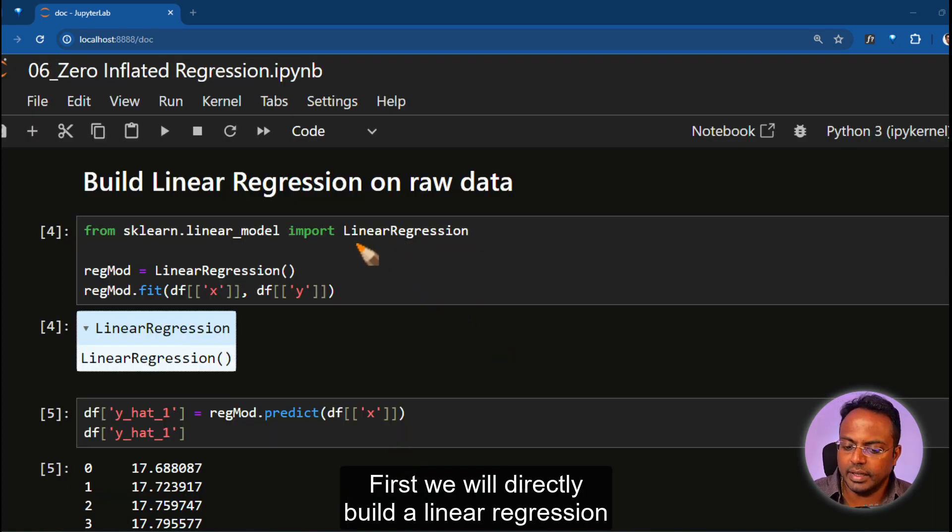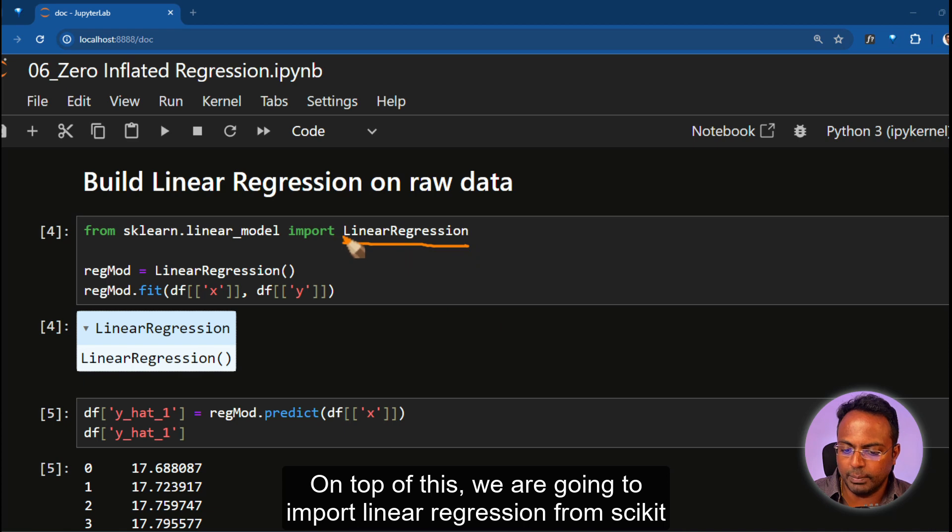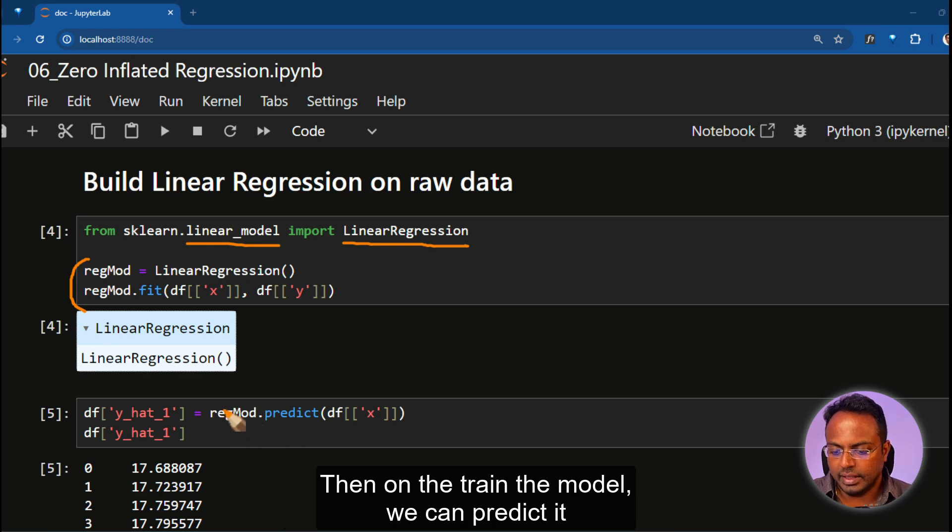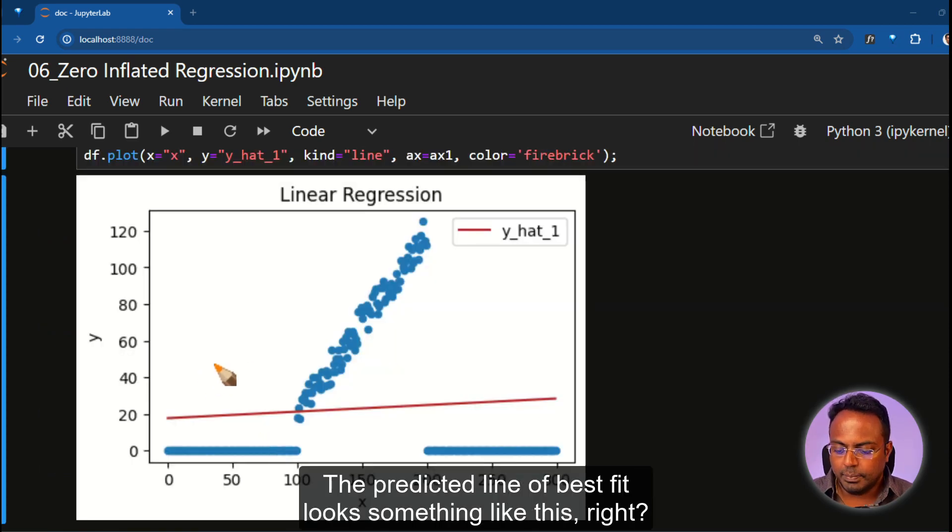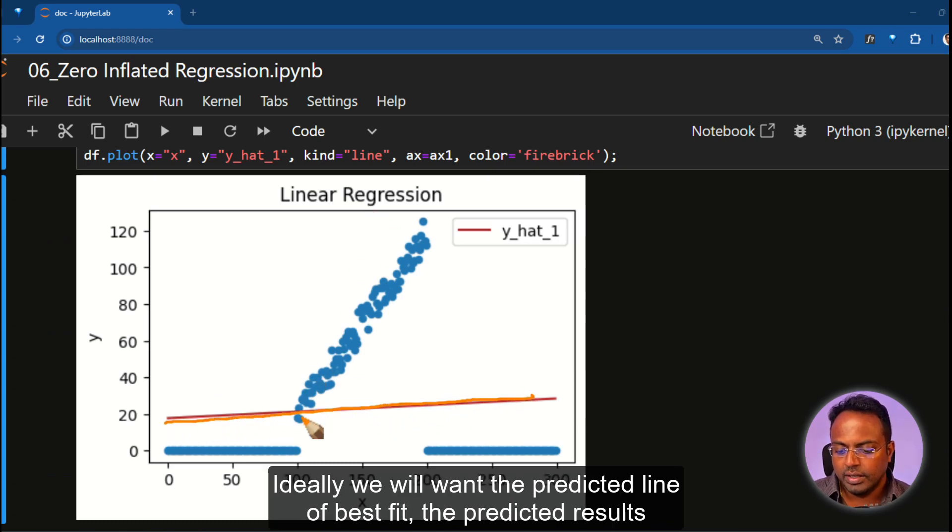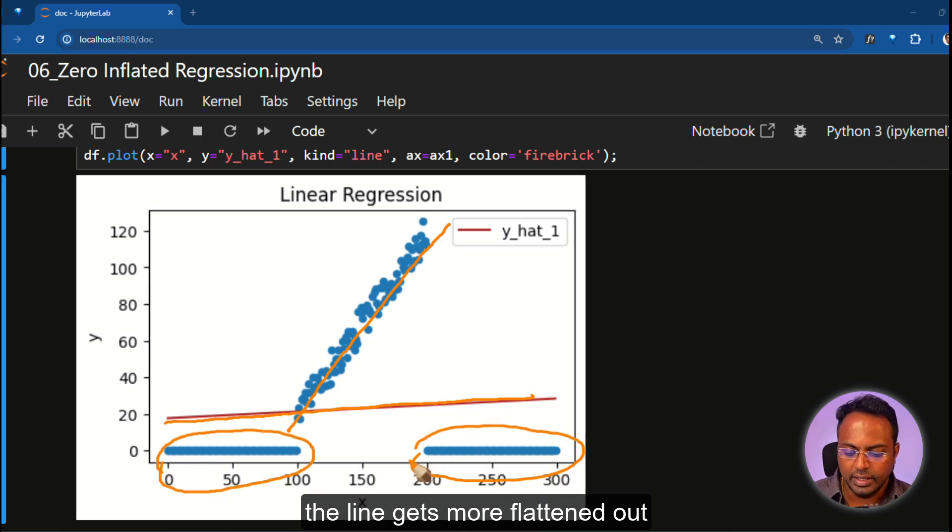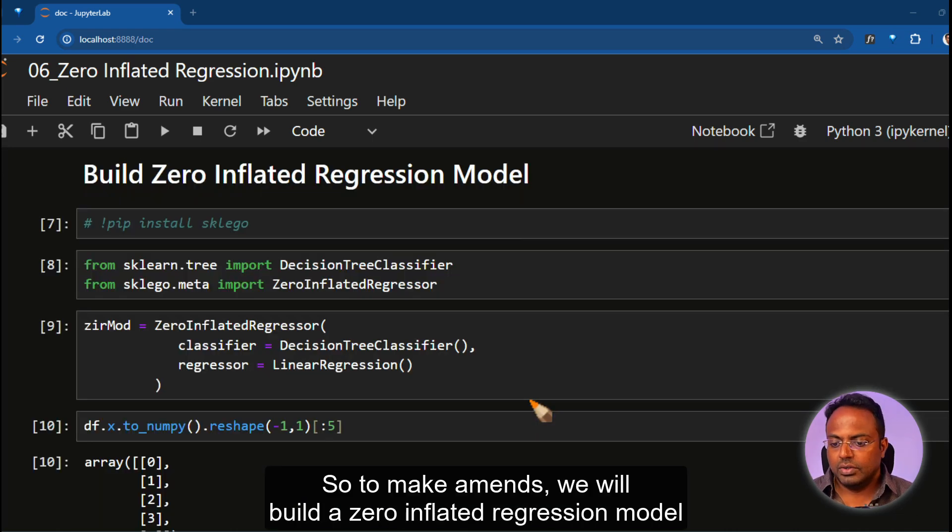First, we will directly build a linear regression on top of this. We are going to import linear regression from scikit-learn linear model, train the linear regression model. Then on the trained model, we can predict it. The predicted line of best fit looks something like this. Ideally, we will want the predicted line of best fit to follow this pattern here. But because of the presence of these zeros here and here, the line gets more flattened out.